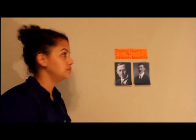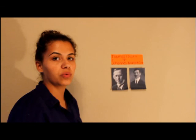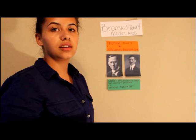Thomas Lowry and Johannes Bronsted worked together to create the Bronsted-Lowry Model, finishing it in 1923. They said a base is any substance that can accept protons, and an acid is any substance that can donate protons.